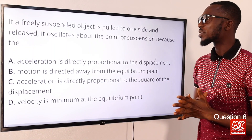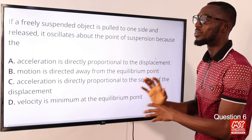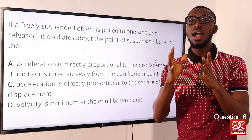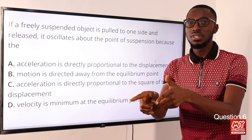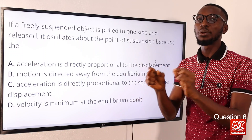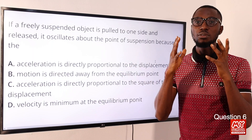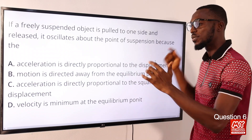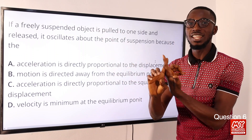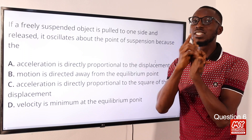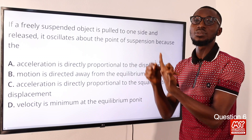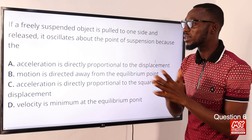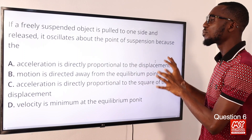Question six: if a freely suspended object is pulled to one side and released, it oscillates about the point of suspension. From the definition of simple harmonic motion, the acceleration is directed towards a fixed point and is proportional to displacement. At the equilibrium position, displacement is zero and speed is maximum, while acceleration is also zero — showing a directly proportional relationship. The correct option is option A.